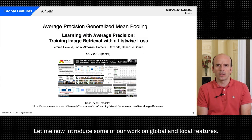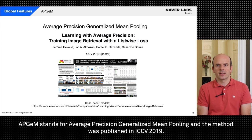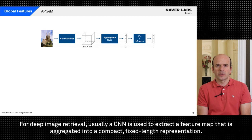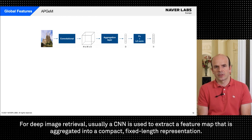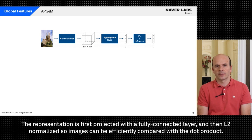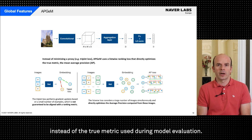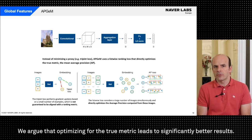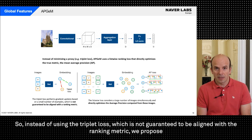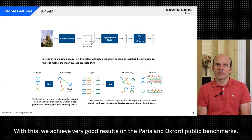Let me now introduce some of our work on global and local features. I will start with APGEM. APGEM stands for Average Precision Generalized Mean Pooling and the method was published in ICCV 2019. The models and code are available on our website. For deep image retrieval usually a CNN is used to extract a feature map that is aggregated into a compact fixed length representation. The representation is first projected with a fully connected layer and then L2 normalized so images can be efficiently compared with the dot product. The motivation of this work is that state-of-the-art methods in deep image retrieval rely on loss functions that minimize a proxy instead of the true metric used during model evaluation. We argue that optimizing for the true metric leads to significantly better results. So instead of using the triplet loss which is not guaranteed to be aligned with the ranking metric we propose to directly minimize the average precision for a large number of images. With this we achieve very good results on the Paris and Oxford public benchmarks.